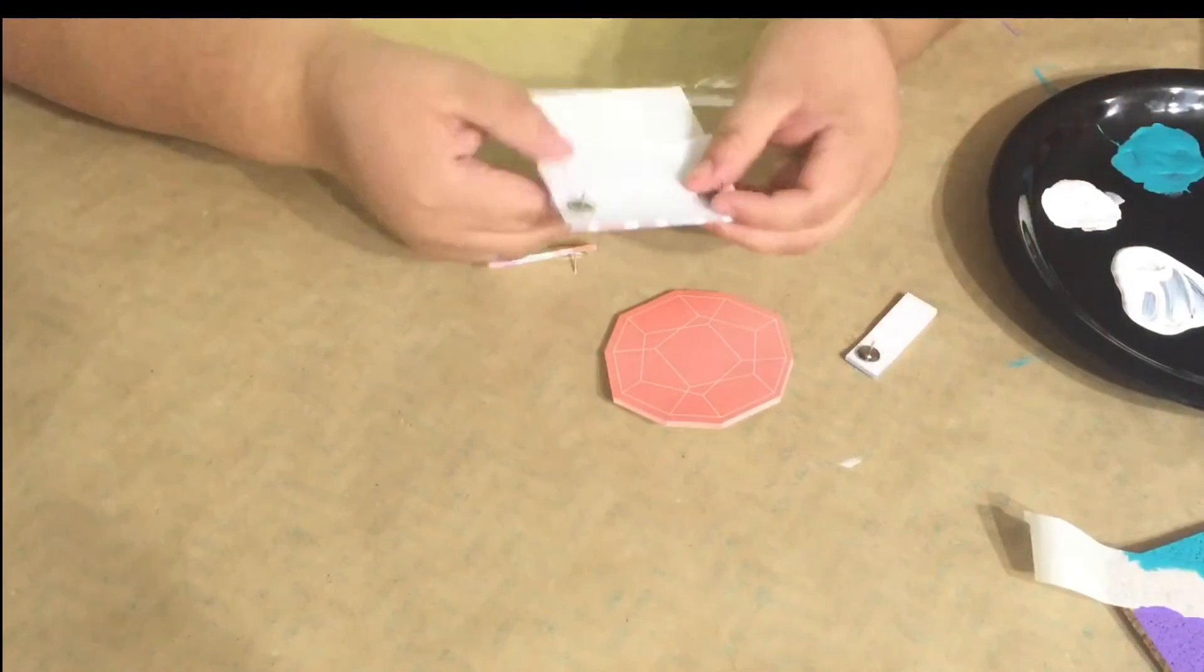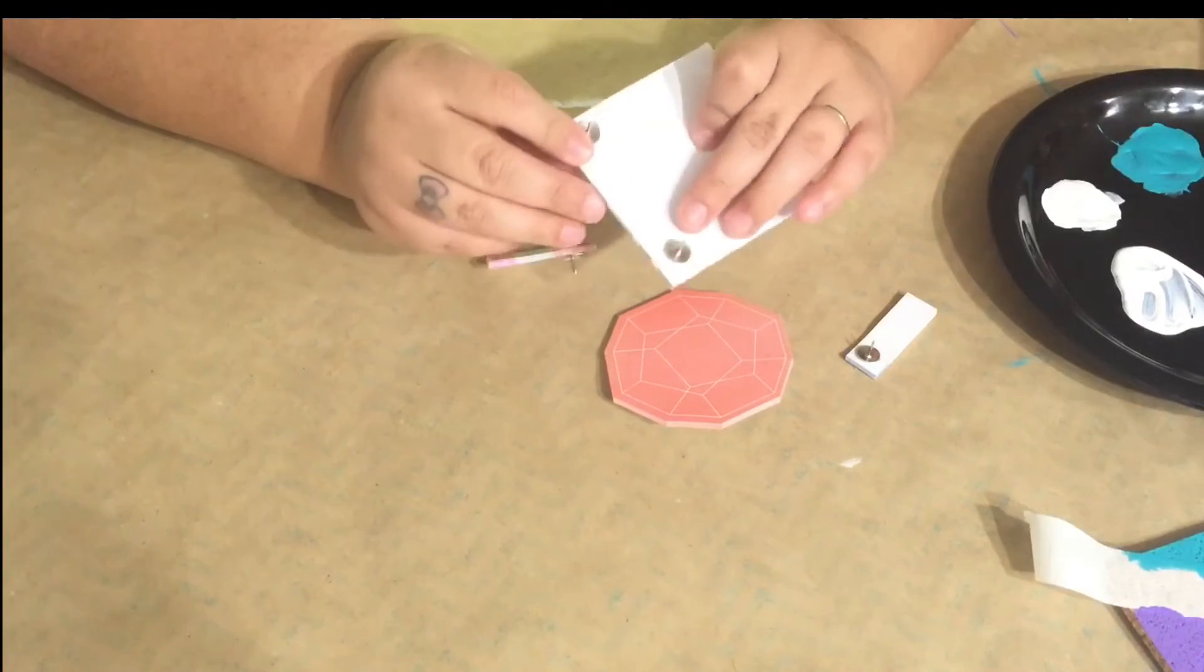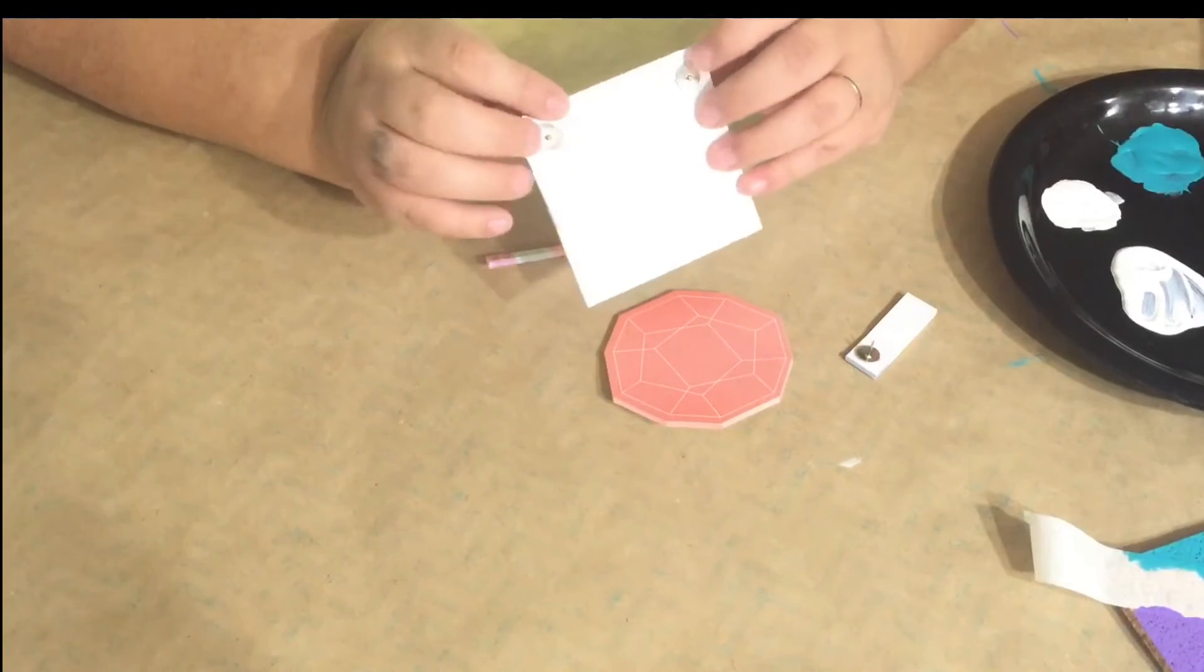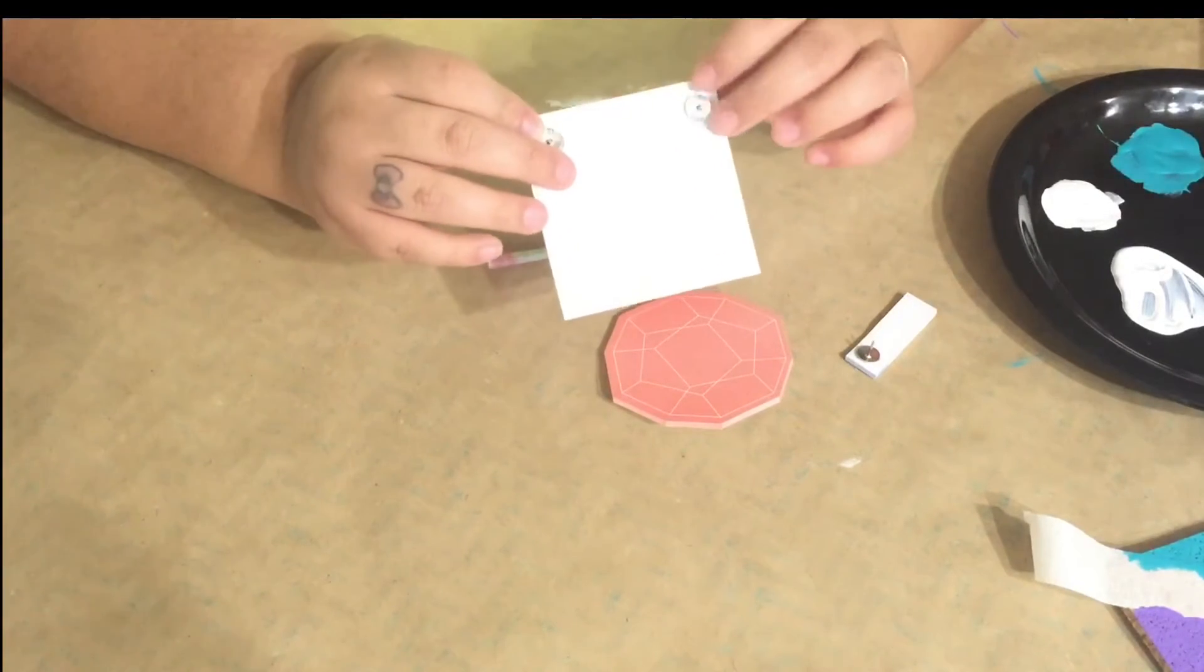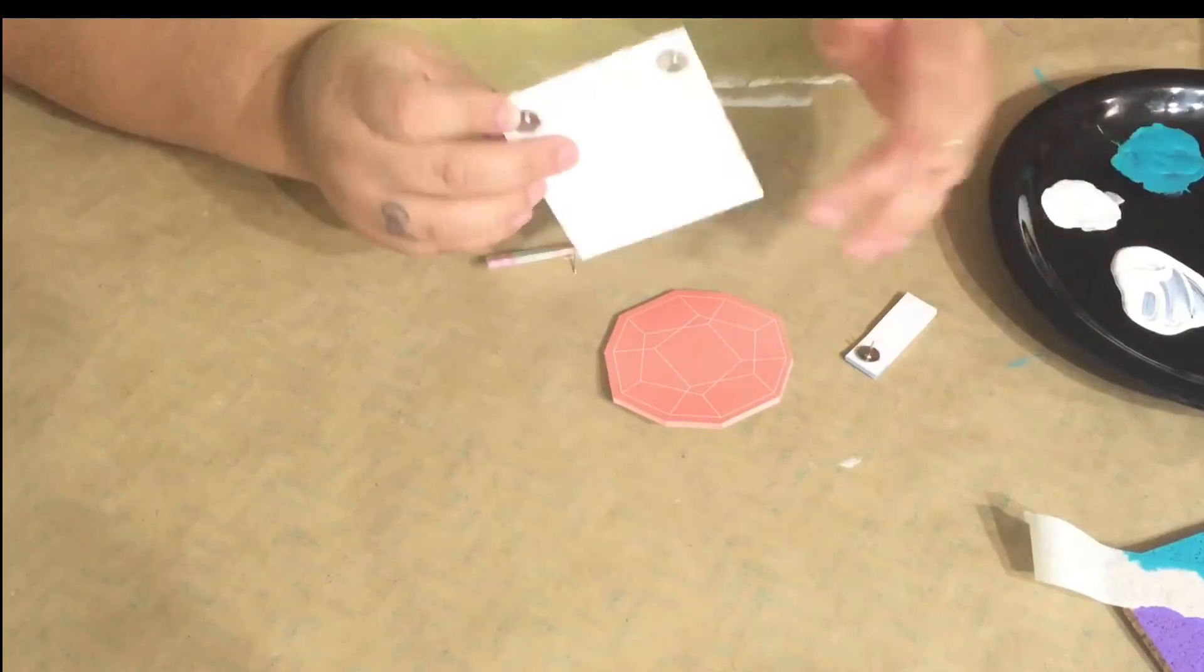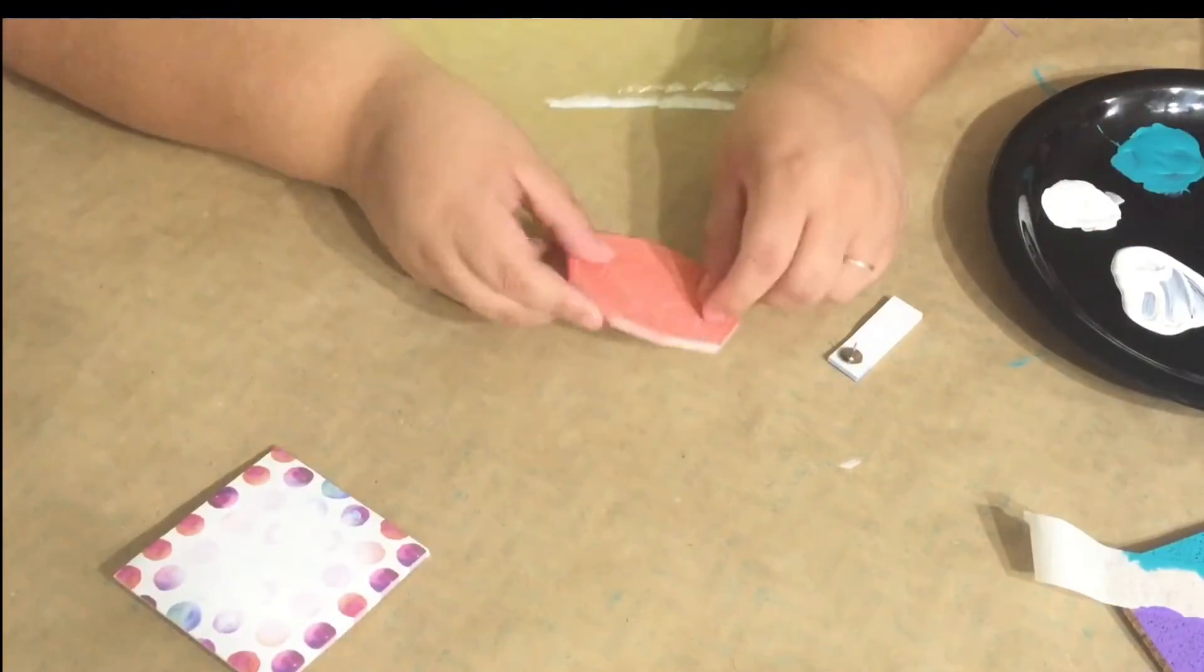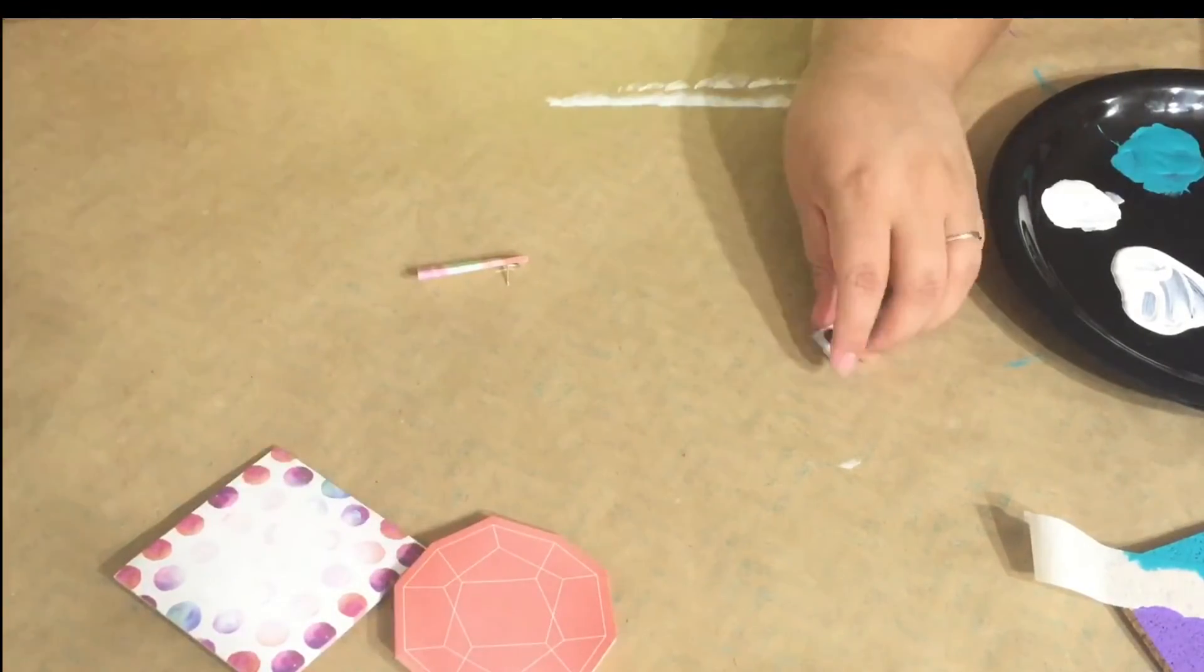Here are the notepads that I showed you at the beginning of the video. What I did was I glued tacks onto the back with hot glue. That way you don't have to hot glue the notepad onto the corkboard, because if you do that, once you're done with the notepad you have to peel it off and you'll probably peel off your paint. So it'll be easier to replace the notepads once you're finished with them and also put new ones on when you need them.